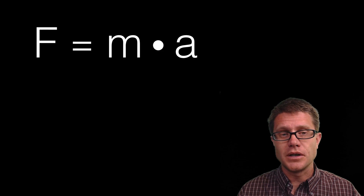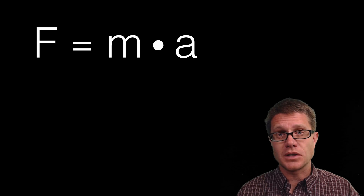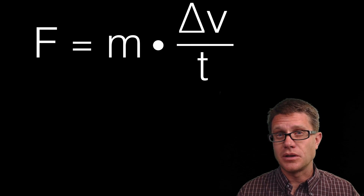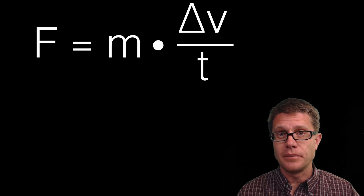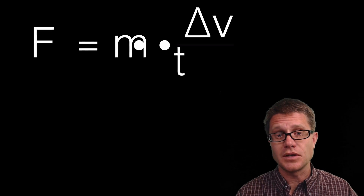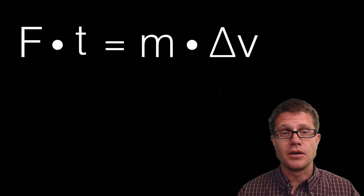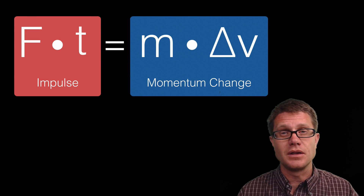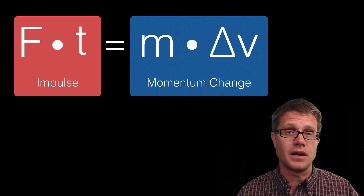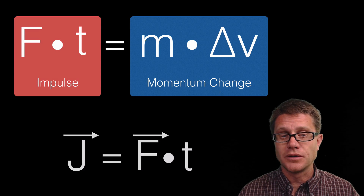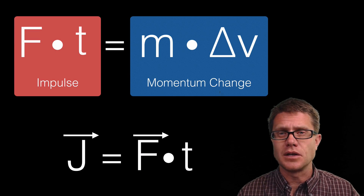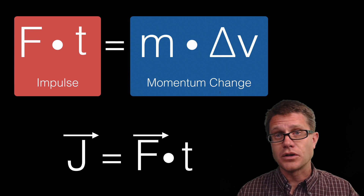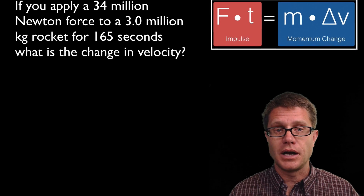To go back over what impulse is: starting from F = ma, Newton's second law, we can say acceleration is simply the change in velocity over time. If we multiply both sides by time, then on the right side we have change in momentum, and on the left side we have impulse. These are equivalent — exactly the same. Impulse, represented by J, is simply force times time, and it is a vector equal to the force times the duration it is applied.